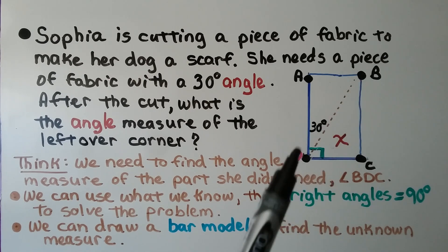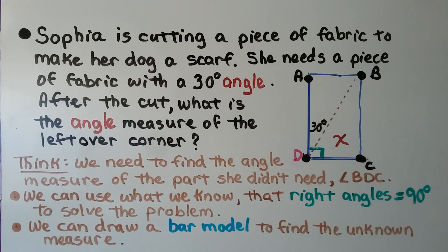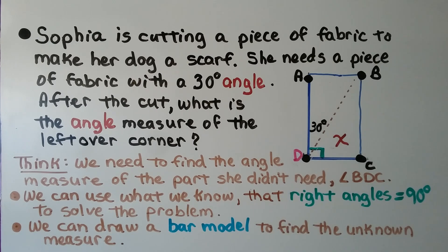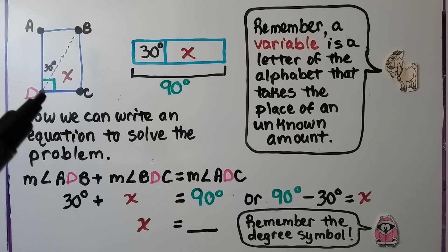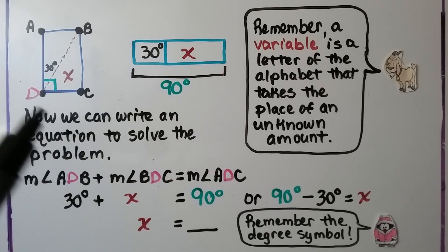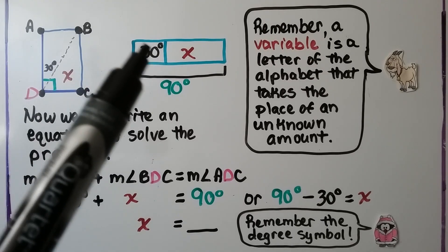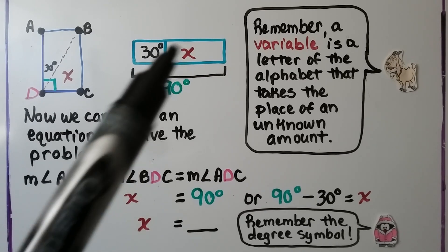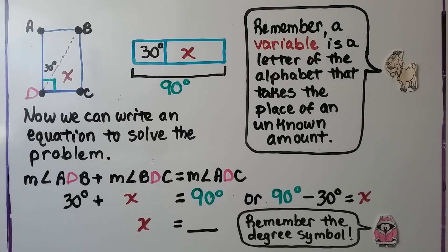We need to find angle BDC. We can use what we know — that right angles are equal to 90 degrees — to solve the problem. We know this is a 90 degree angle, we know this one is 30 degrees, and we need to find this part. We can draw a bar model to find the unknown measure. We know the entire corner is 90 degrees, so we draw a rectangle for our bar model that is 90 degrees in all. We know this portion is 30 degrees, and whatever is left over is x. A variable is the letter of the alphabet that takes the place of an unknown amount.